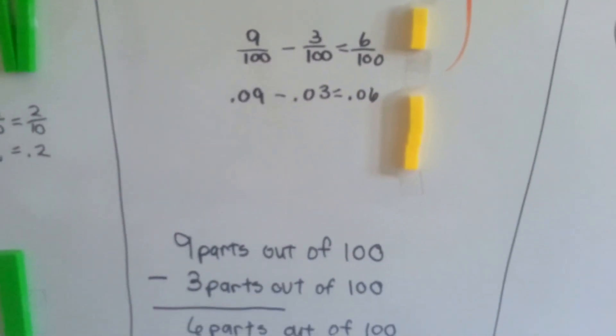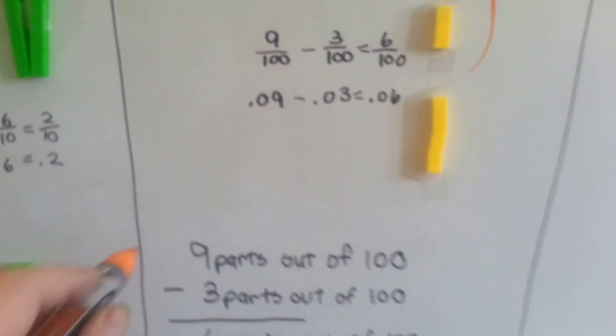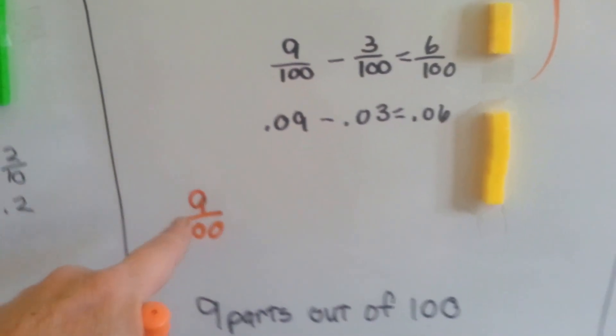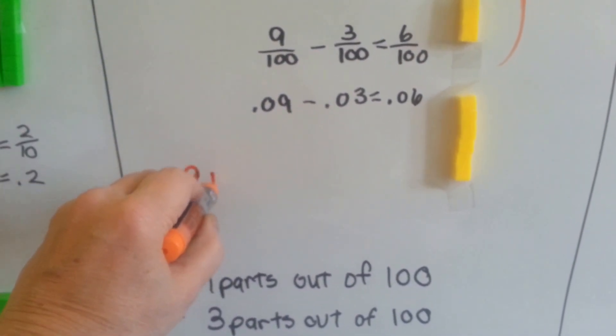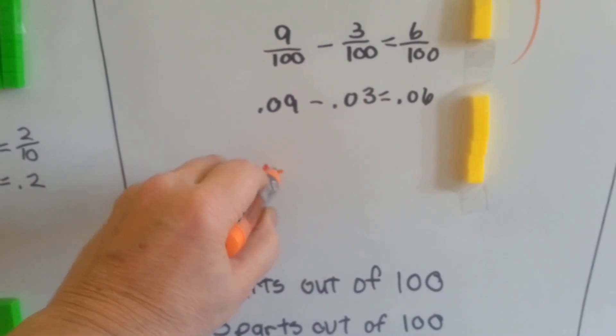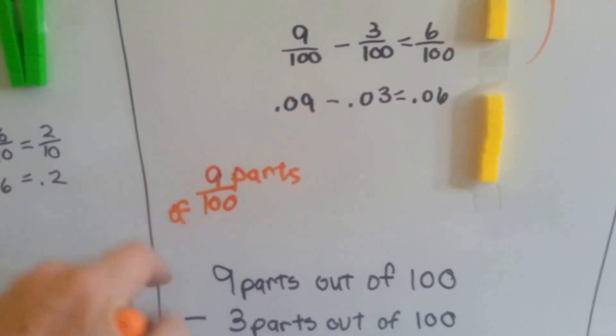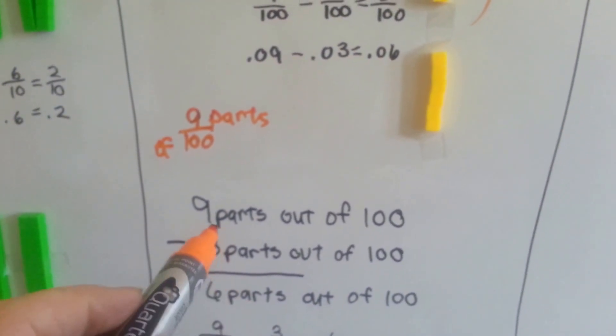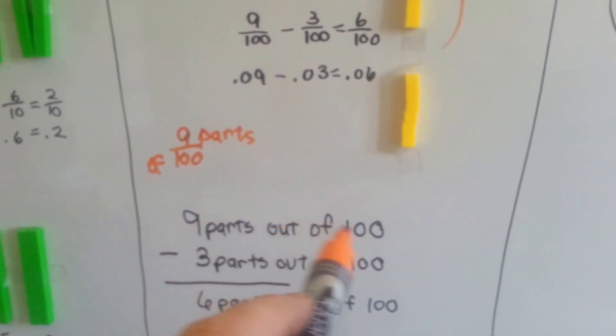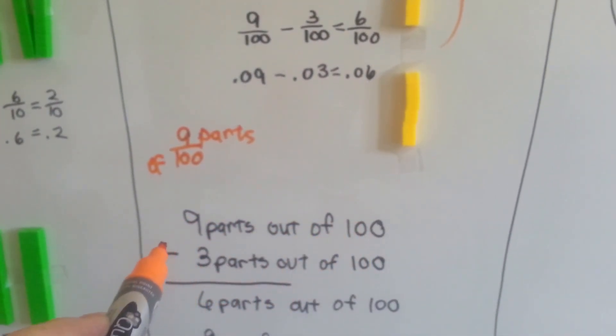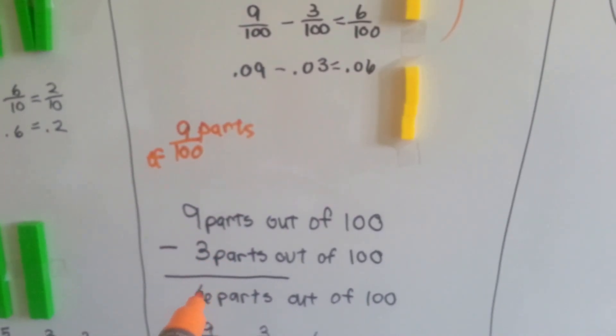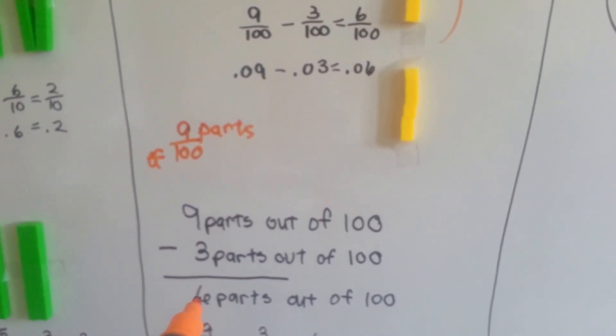So remember how I always say that a fraction, when you have like nine one-hundredths, what it really means is nine parts of one hundred. I always say that, because that helps you understand fractions. So if you had nine parts out of a hundred, and we took three parts away from that nine parts of a hundred, you would have six parts out of a hundred left.